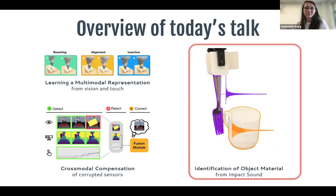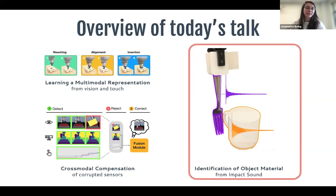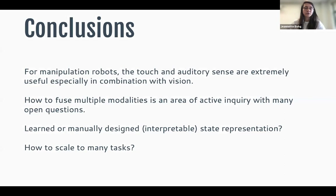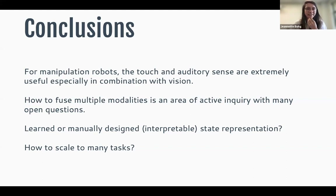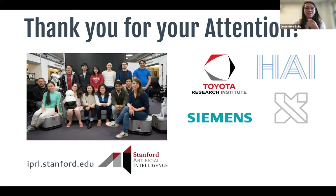DIFF-IMPACT uses physics-based models to extract physically interpretable parameters for simulation and extrapolation. It's differentiable, learning from recordings in the wild, and solves forward and backward problems in one framework. These results enable downstream robotics tasks like material classification and stiffness estimation. That concludes my talk: different modalities — visual, touch, and sound — can all inform a robot to be better at manipulation. Touch and auditory senses are extremely useful, especially combined with vision, and fusing modalities effectively remains an active area of inquiry.